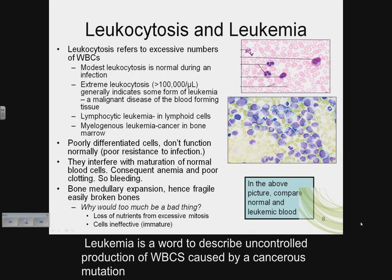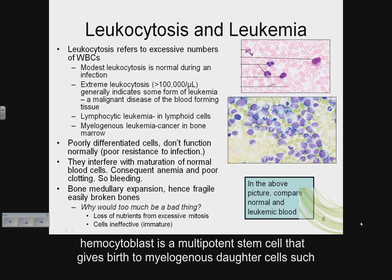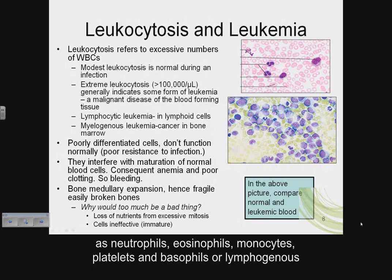Leukemia is a word to describe uncontrolled production of white blood cells caused by a cancerous mutation of a myelogenous or lymphogenous cell. Remember that the hemocytoblast is a multipotent stem cell that gives birth to myelogenous daughter cells such as neutrophils, eosinophils, monocytes, platelets, and basophils.